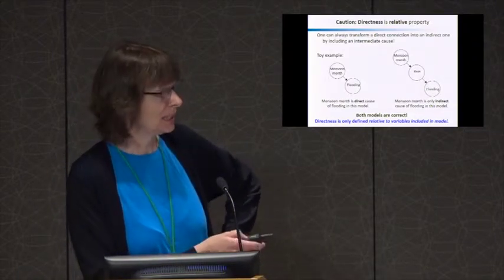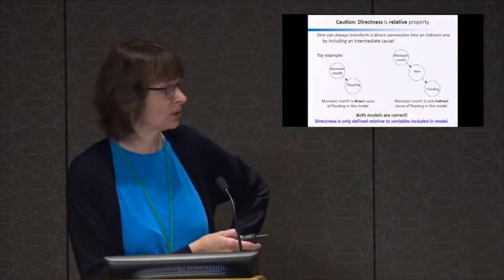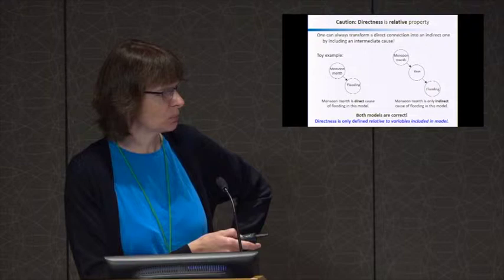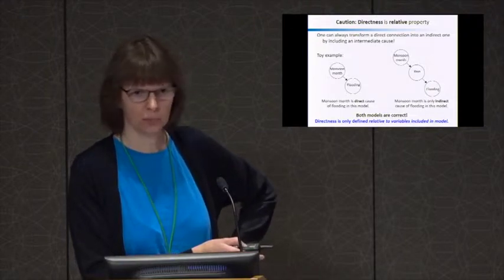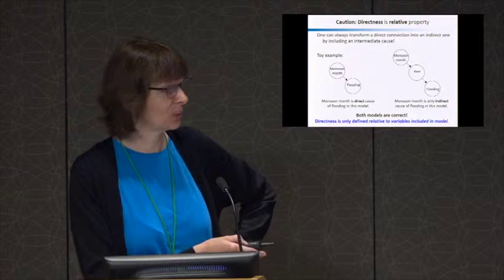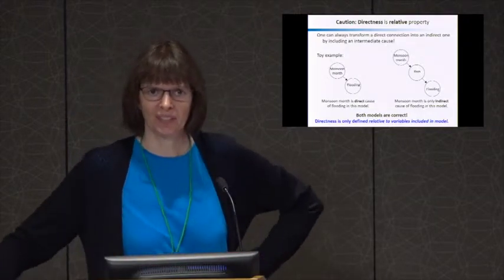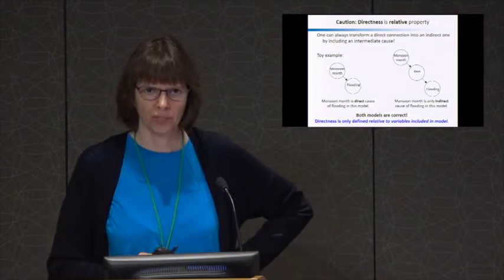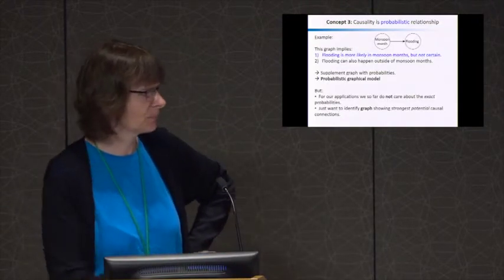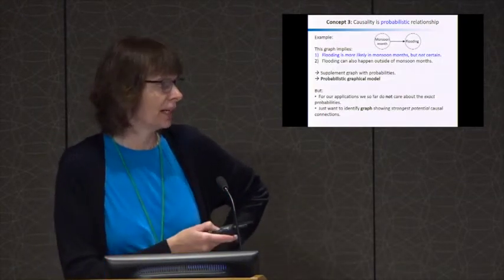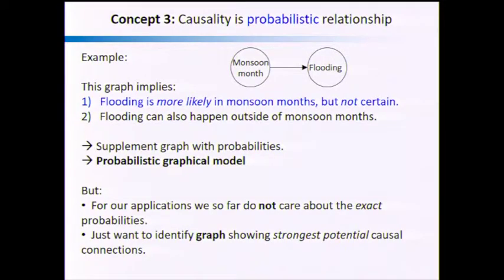The goal of causal analysis is to identify only direct connections and get rid of all the others. Be warned: directness is a relative concept — it's related to what nodes you include in your graph. Here's a toy example: say I live in a monsoon area. If it's a monsoon month, it's much more likely there's flooding — direct cause. But if I put rain in as an intermediate variable, then monsoon month causes rain, which causes flooding. If I know how much rain there is, I can tell how much flooding there will be — I don't care whether it's a monsoon month or not. So we've just made what was a direct cause an indirect one just by including an intermediate variable. Variable selection is really important when you interpret your results.